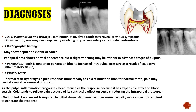Vitality tests include the thermal test — pain increases on applying heat and is relieved on applying cold. The electric pulp tester is also used: in early stage irreversible pulpitis, the current required is less, but as the tissue becomes more necrotic over time, a higher current level is required to elicit a response.